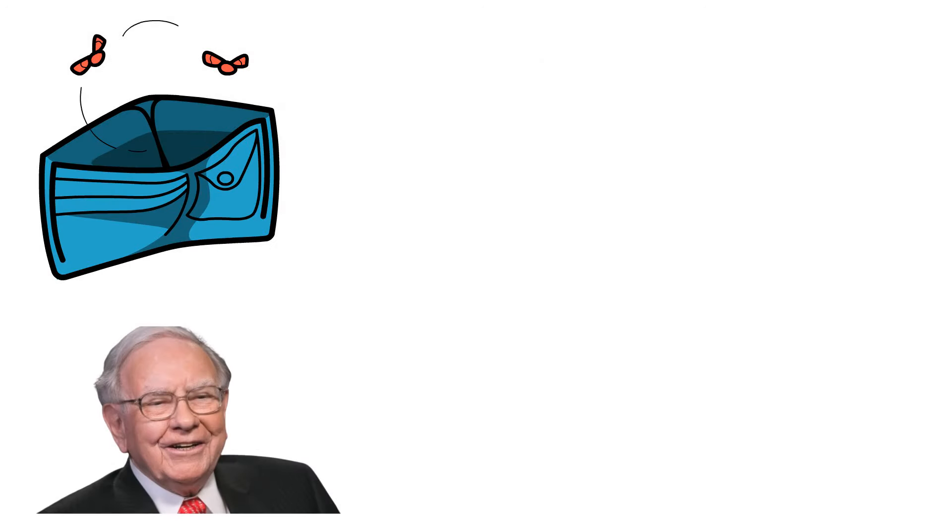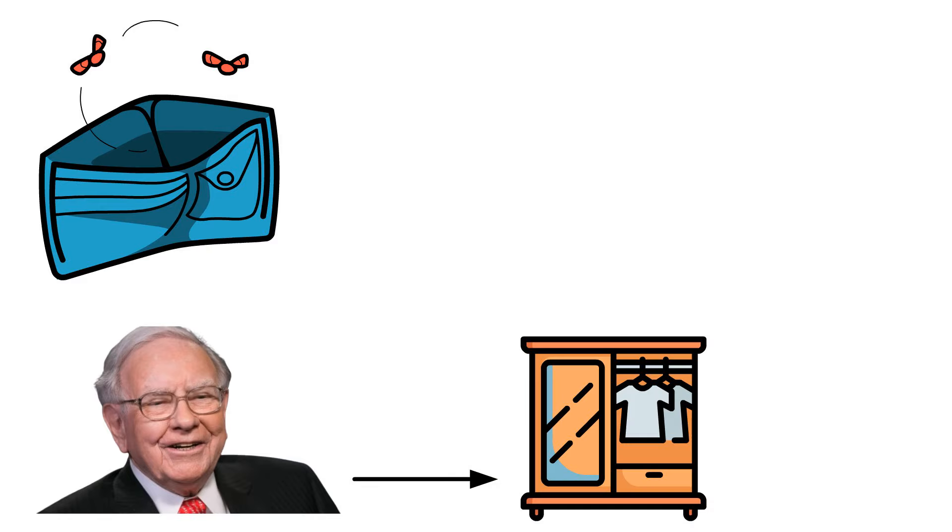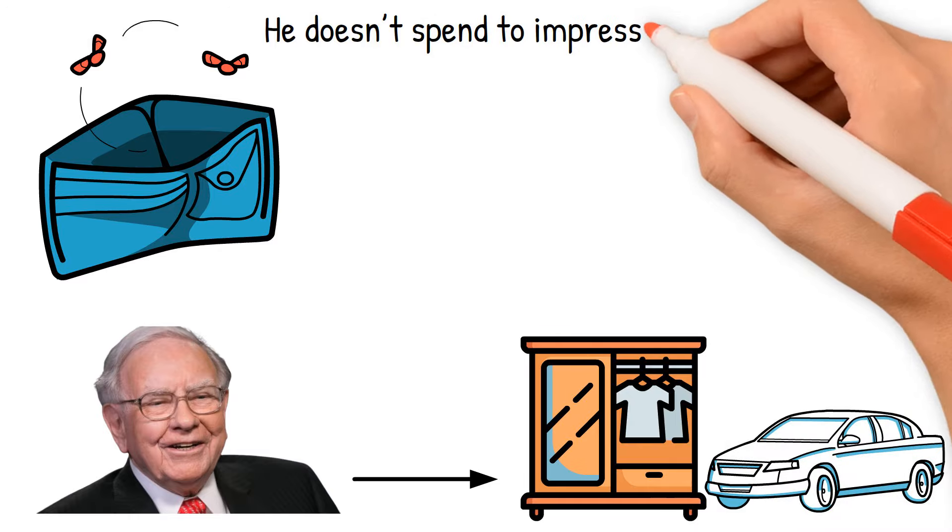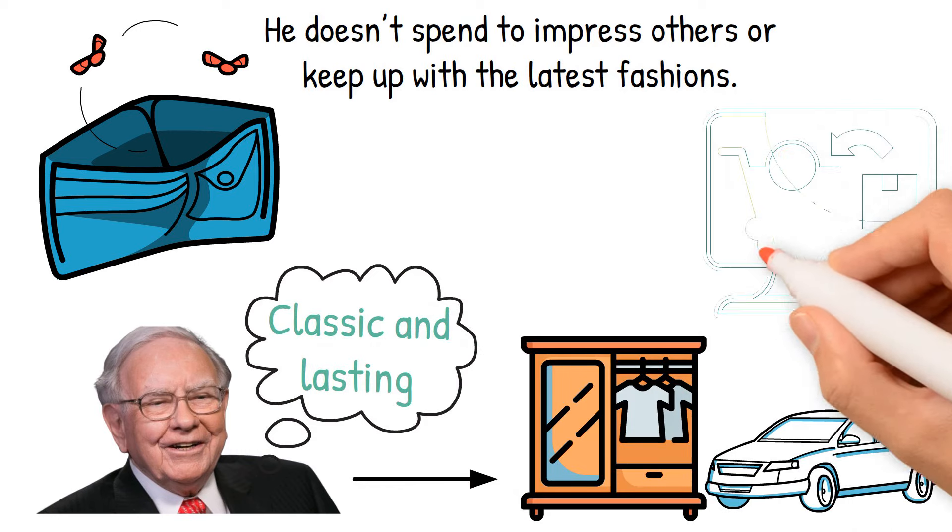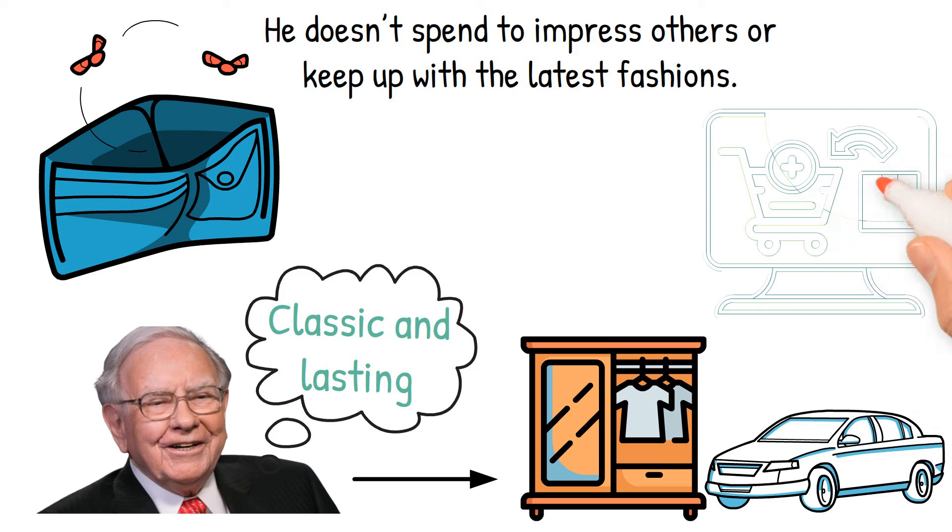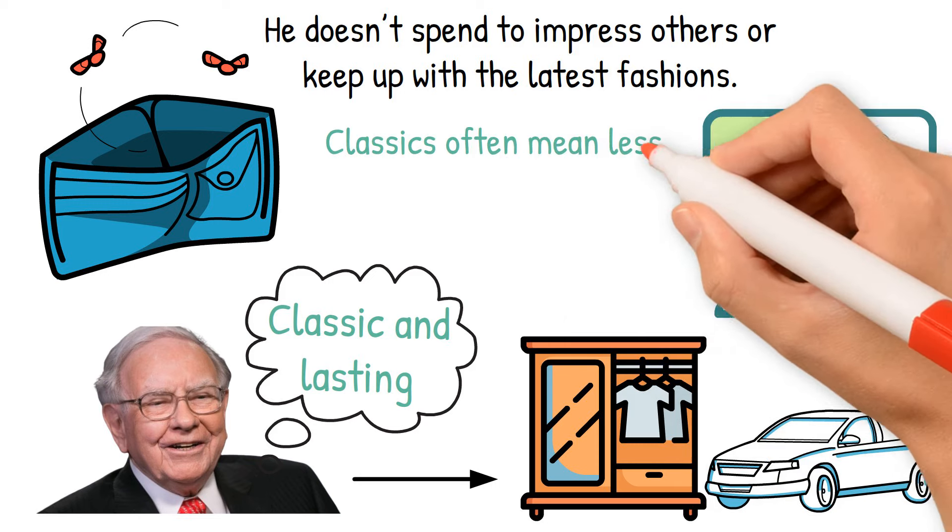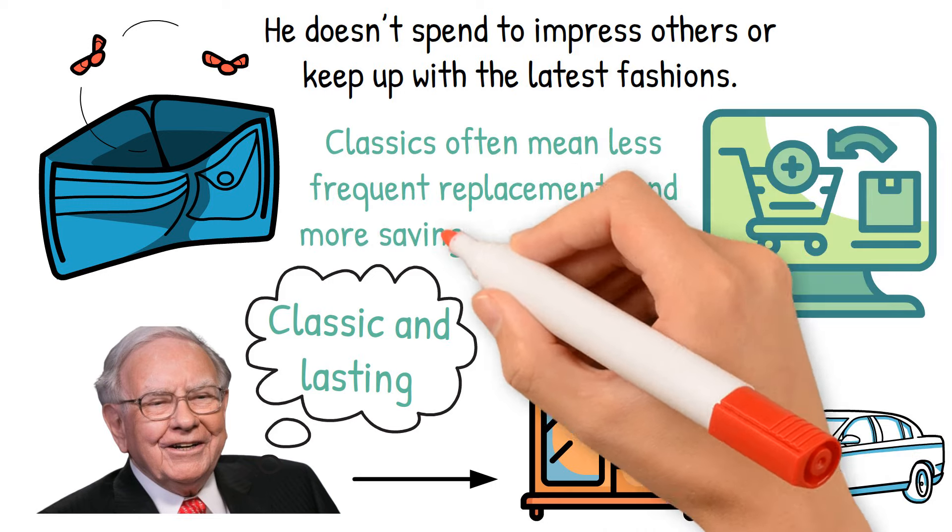Buffett himself exemplifies this principle. He's known for his timeless wardrobe and simple functional cars. He doesn't spend to impress others or keep up with the latest fashions. Instead, he chooses things that are classic and lasting. So when you're deciding what to buy, choose items that won't go out of style quickly. Classics often mean less frequent replacements and more savings in the long run.